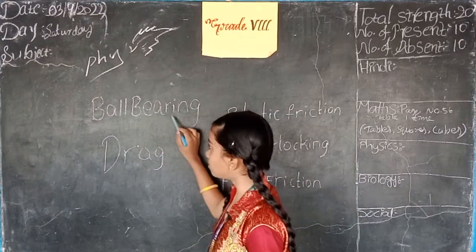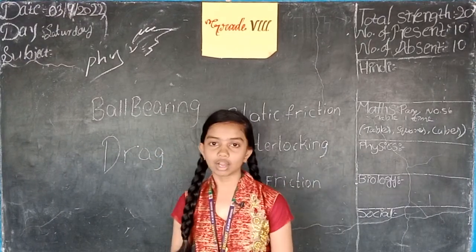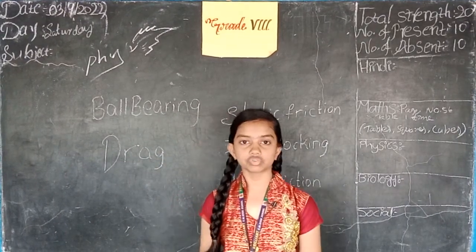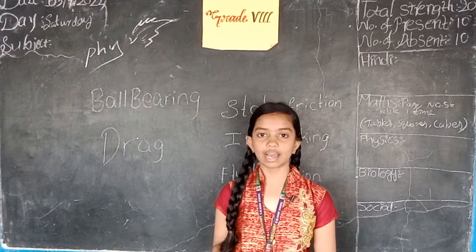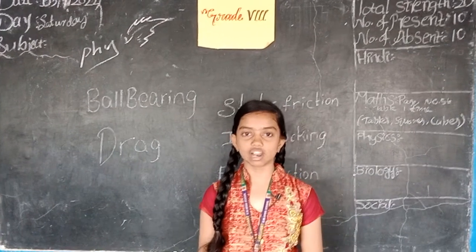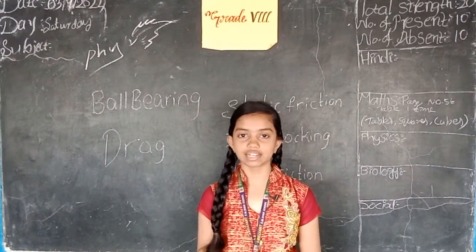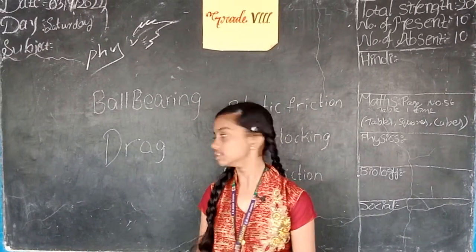First one, ball bearing. Ball bearing reduces friction. It is used between the hub and axle of ceiling fans and bicycles.